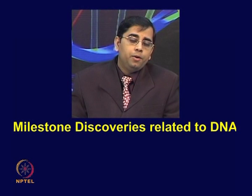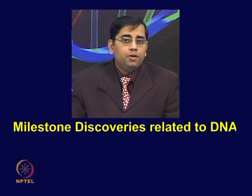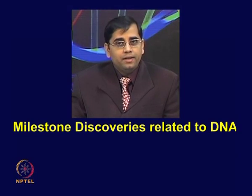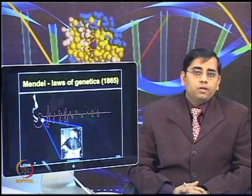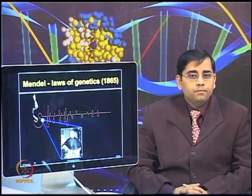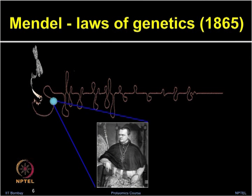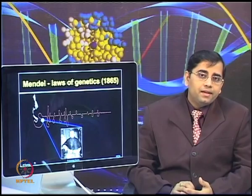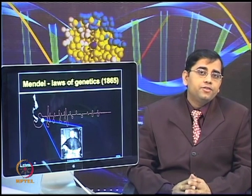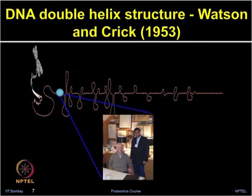Before we discuss the structure and function of DNA, let me take you through some historical perspective — the milestone discoveries related to DNA. The first one is Mendel's law of genetics in 1865. Mendel gave very fundamental laws of genetics: discrete factors, now known as genes, can transmit characteristics from one generation to the next. A diploid individual must contain two copies of genes, and each parent can transmit one copy to the next generation. After Mendel's hereditary laws, a lot of research started, and one of the major milestones was the DNA double helix structure discovered by Watson and Crick in 1953.